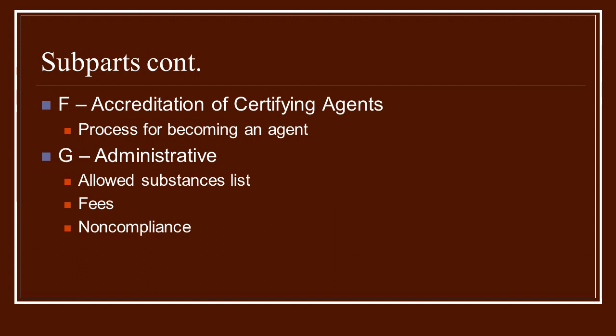Also under G are the fees — yes, there are fees that go with being certified. Also under G is noncompliance. If you are already certified organic and an inspector comes out and finds something you are not complying with, there is a very specific method for handling that — including notification that you are not complying. It also contains information for if you are found to be negligent, as they can actually fine you, and hopefully it doesn't get to that point.